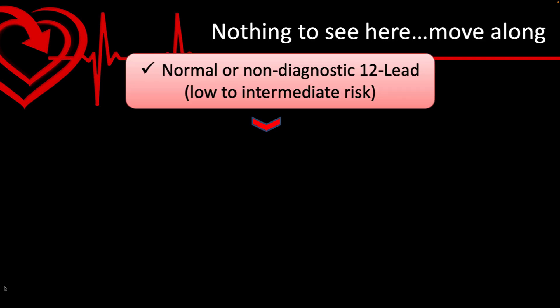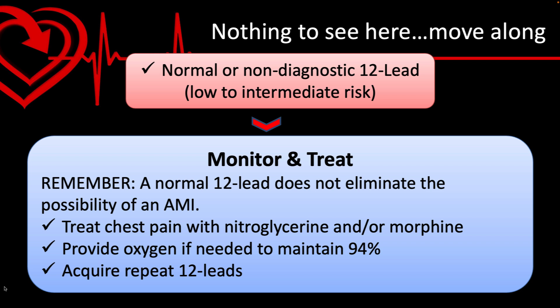At the other end of the spectrum, a normal or non-diagnostic 12-lead represents low to intermediate risk patients. It's important to remember that a normal 12-lead does not eliminate the possibility of an MI — a large percentage of MIs will not show up as a STEMI, at least not early on. We still need to treat these patients appropriately: treat chest pain with nitro and/or morphine, provide oxygen if needed, and acquire repeat 12-leads while reassessing regularly. If their symptoms are the result of a blocked artery, that is likely to progress and worsen, and a subsequent 12-lead might show evidence that the first did not.